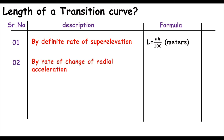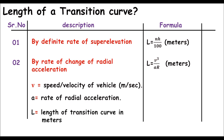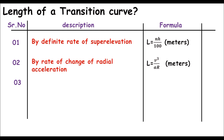Method number two is based on the radial acceleration rate. We use the formula: L = v³ / (a × R). This gives us the length of the transition curve in meters, where v is the speed of the vehicle in meters per second, a is the rate of radial acceleration, R is the radius, and L represents the length of the transition curve in meters.